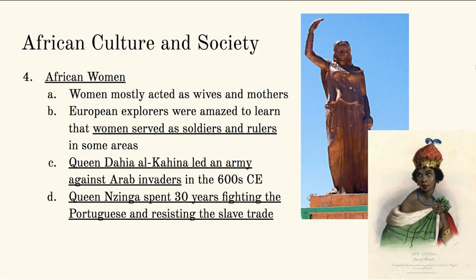Then we have Queen Nzinga, who spent 30 years fighting against the Portuguese. She resisted the slave trade. Portugal is a tiny country off of Spain that today isn't much of a world power, but Portugal is actually responsible for all European nations going down to Africa and trying to take their gold and salt, and for starting the slave trade — Portugal is the first to go down to Africa. When they arrive, they see a queen of her nation who is going to spend 30 years of her reign fighting against them and resisting the slave trade coming to Africa.